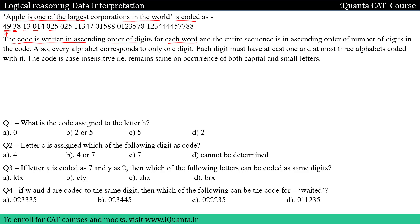For example, in 49 the digits are in ascending order. In 38, the digits are in ascending order. In 13, the digits are in ascending order. In 014, the digits 0 and 4 are in ascending order. In 025, the digits are also in ascending order. And the entire sequence is in ascending order of number of digits in the code.